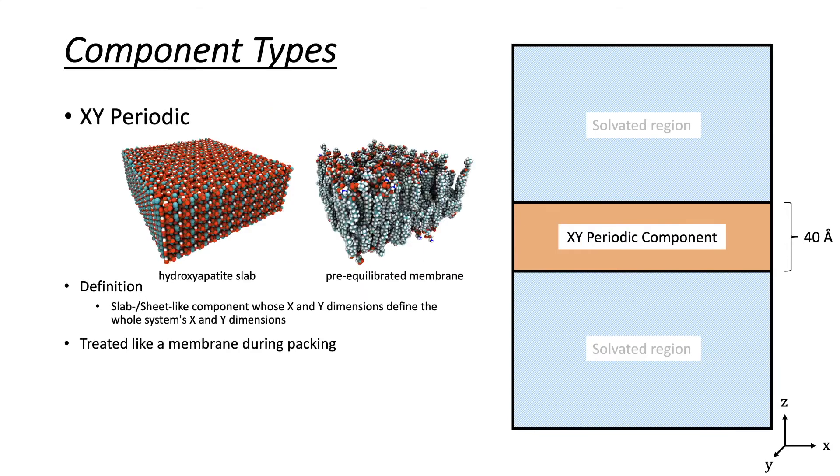An XY periodic component is an infinite sheet-like material whose XY dimensions define the system size along X and Y. This can include pre-equilibrated membranes, membrane-like polymers, or nanomaterial surfaces.